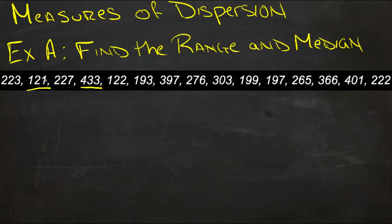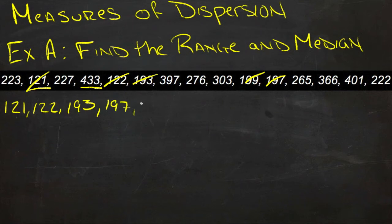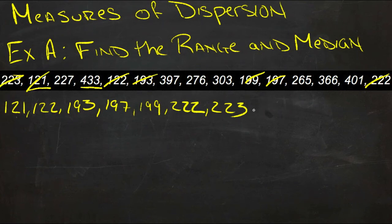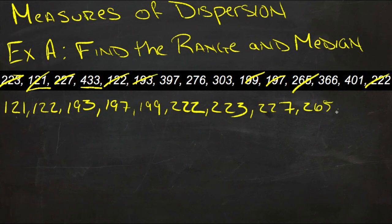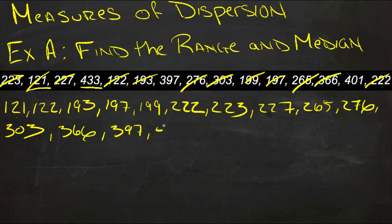So if we start putting these into order, we need to make sure that we get them all and only use them once — I'm going to cross them out as I reorder them. So we have 121, 193, 197, 199, 222, 223, 227, 265, 276, 303, 366, 397, and 401.